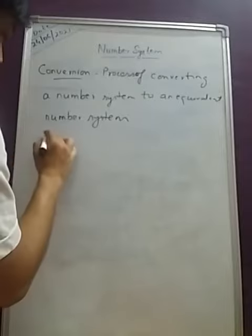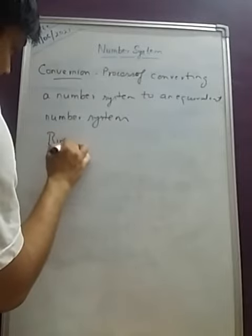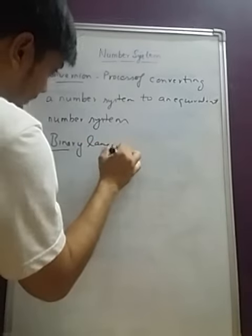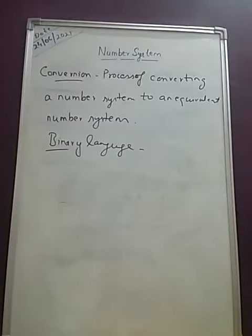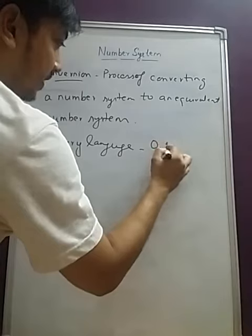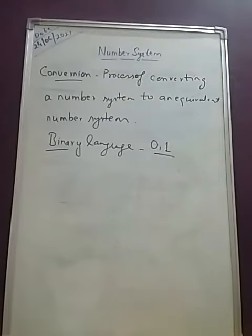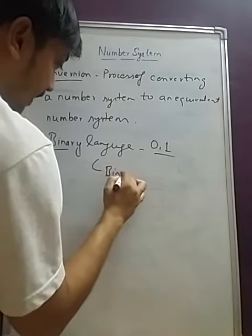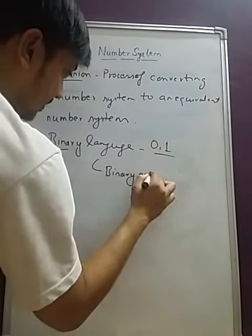Because as I have already told you, computer understands only the binary language, which is in the form of 0 and 1. So which kind of number system is used by computer system? Binary number system.